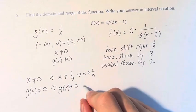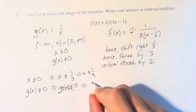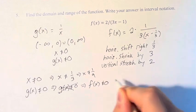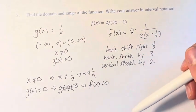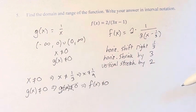And this should be f(x) is not equal to 0. So the domain is that x cannot equal 1 ninth. The range is that it cannot equal 0.